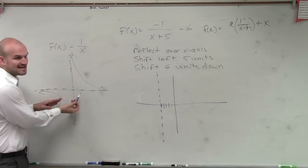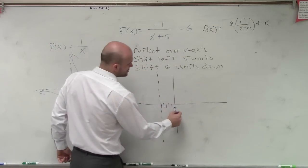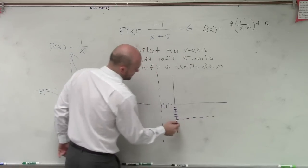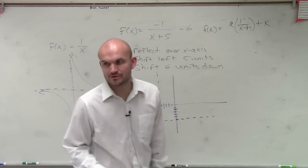We know there's another asymptote at y equals 0. Let's shift that down 6 units. 1, 2, 3, 4, 5, 6. Then, now we have our two asymptotes.